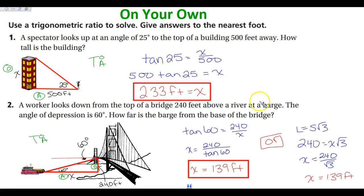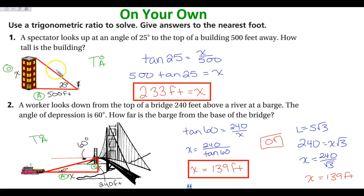Let's check your answers. A spectator is looking up at a building at an angle of 25 degrees to the top of the building, so the 25-degree angle goes at the bottom. The building is 500 feet away, so 500 goes on the horizontal. We want to know how tall the building is — that's the vertical — which is opposite and adjacent, so use tangent.